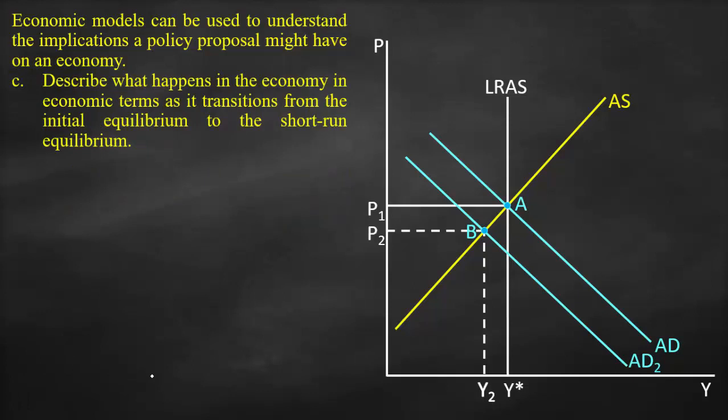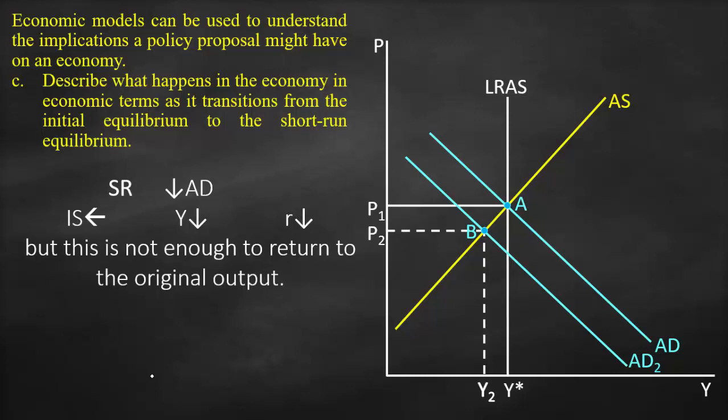The third part: describe what happens as the economy transitions from the initial equilibrium, point A, to the short-run equilibrium, point B. In the short run, a negative aggregate demand shock causes AD to shift left. Consequently, the IS curve shifts to the left, resulting in lower output and a lower interest rate. This is not enough to return to original output — we are producing below potential, creating excess supply, which results in a lower price due to surplus.